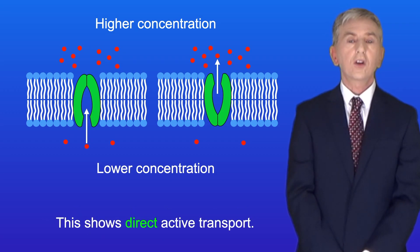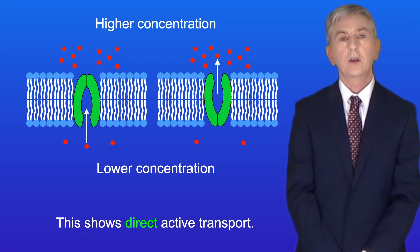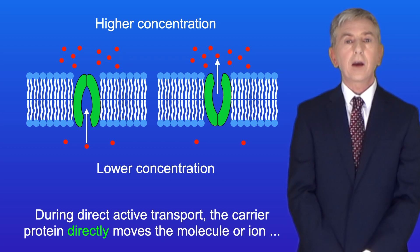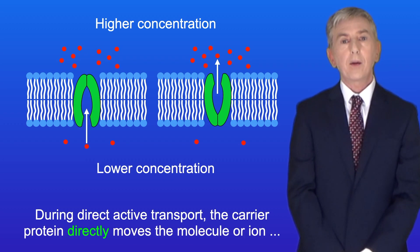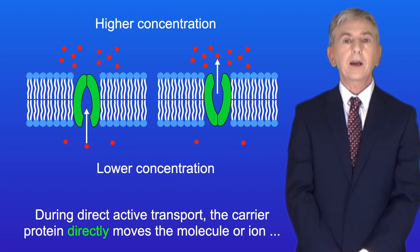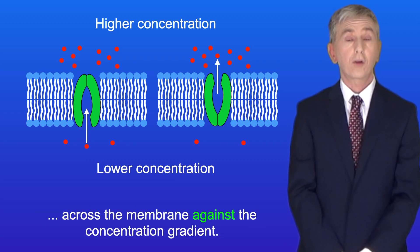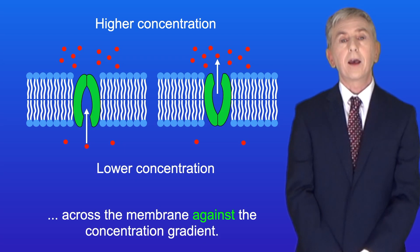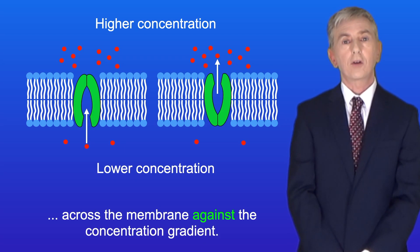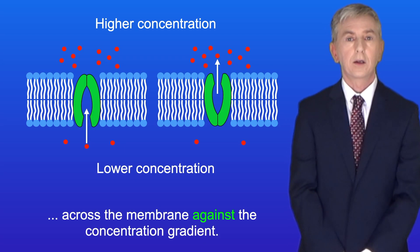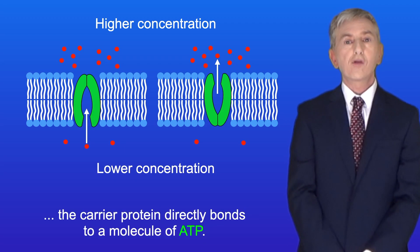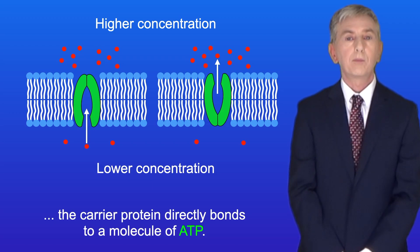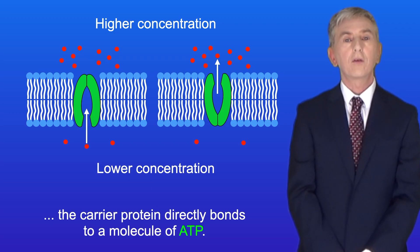This shows direct active transport. During direct active transport, the carrier protein directly moves the molecule or ion across the membrane against the concentration gradient. For this to happen, the carrier protein directly bonds to a molecule of ATP.